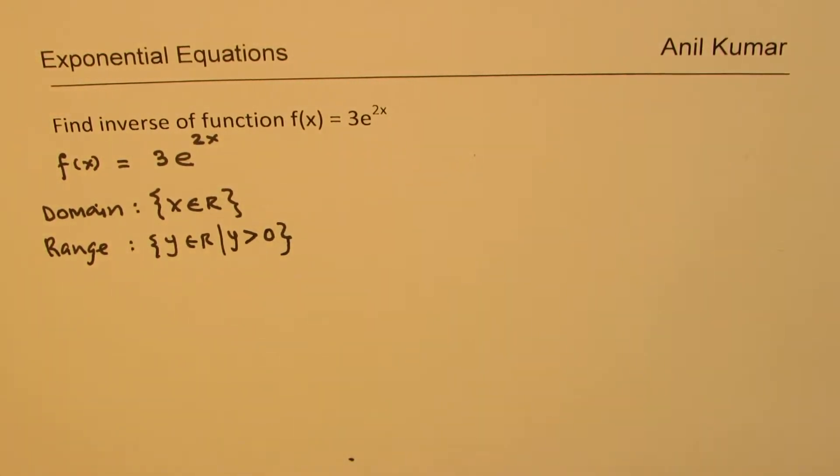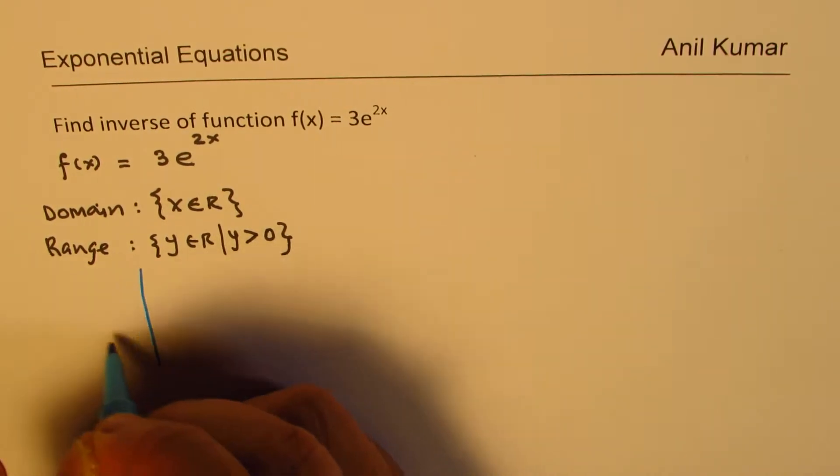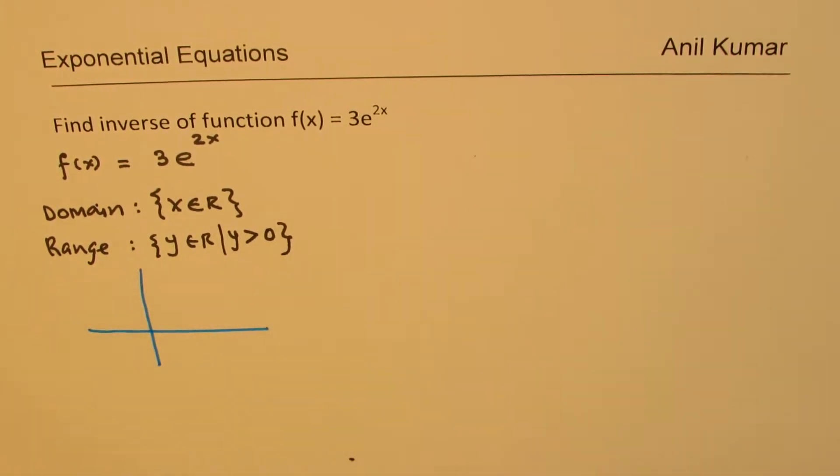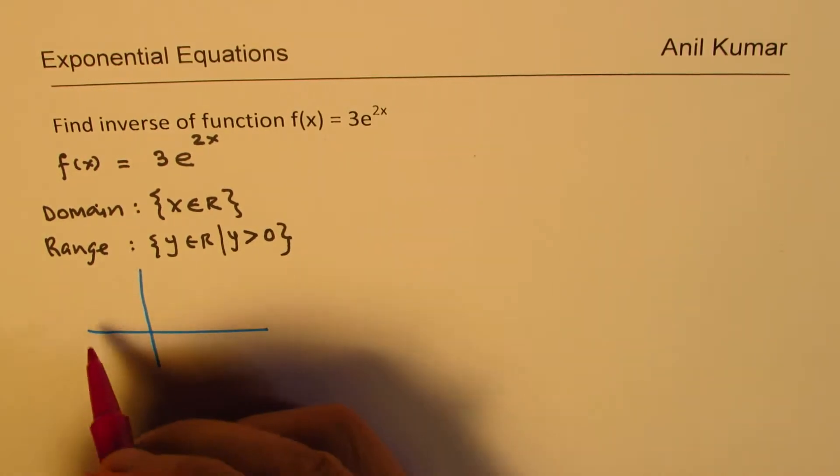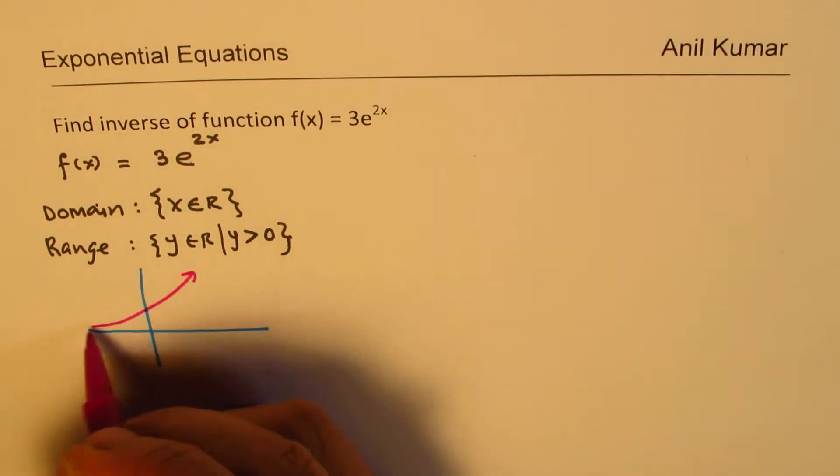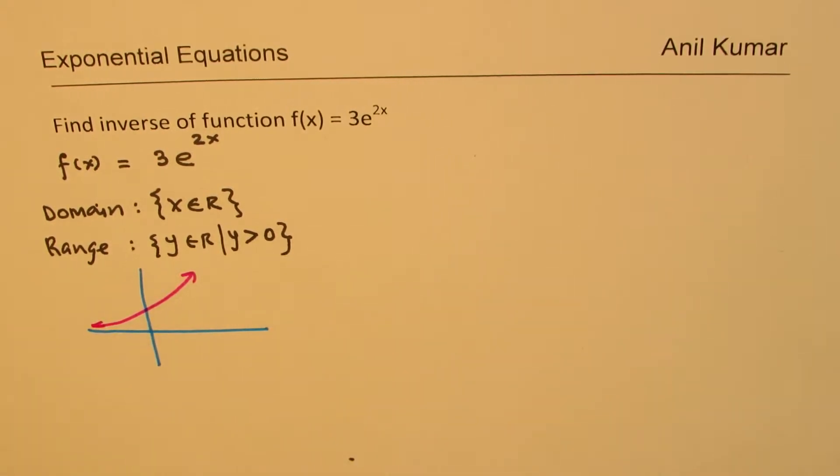When you actually sketch this function, you get what? In short, you get a function which is always increasing, kind of like this. Something like this.